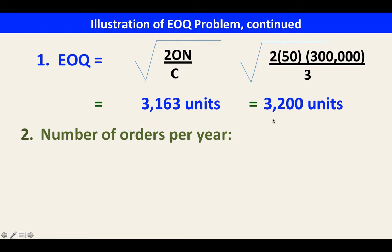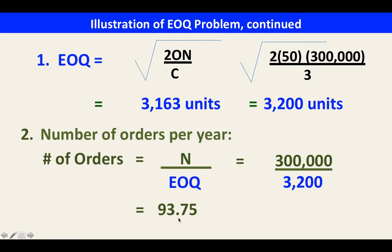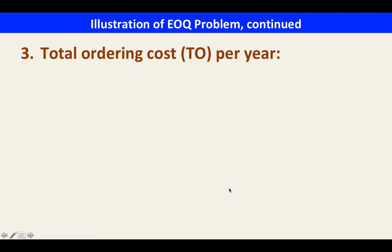To compute the number of orders per year, divide the annual demand (N = 300,000) by the EOQ (3,200 units), giving 93.75. Since the number of orders must be a whole number, we always round up — so the answer is 94 orders per year.